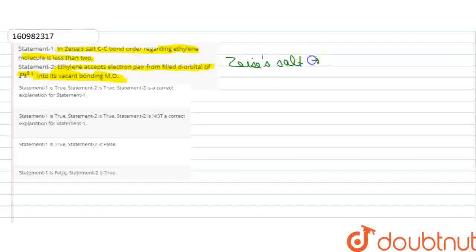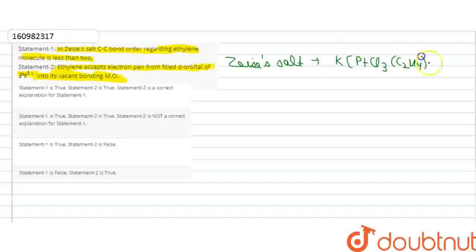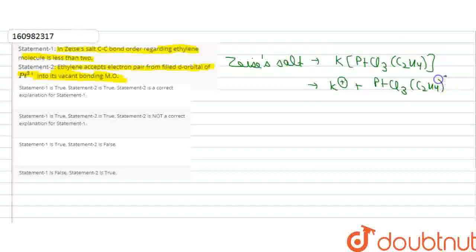Zeise's salt is K[PtCl₃(C₂H₄)]. In ionic form, it is K⁺ and [PtCl₃(C₂H₄)]⁻. Now, one thing to note is that chlorine and C₂H₄ — it will donate 3 chlorines.